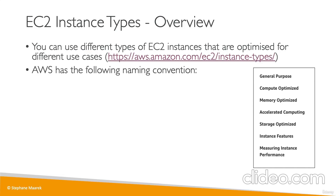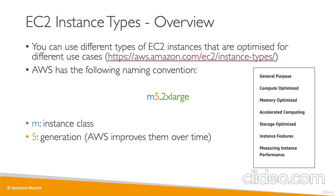AWS has the following naming convention. For example, an M5.2xlarge type of instance: M is the instance class — in this case, a general purpose type. Five is the generation of the instance; as AWS improves hardware over time, it releases a new generation, so after M5, it would go to M6. The 2xlarge represents the size within the instance class — it starts as small, then large, then 2xlarge, 4xlarge, and so on. The more of the size, the more memory and CPU you'll have.